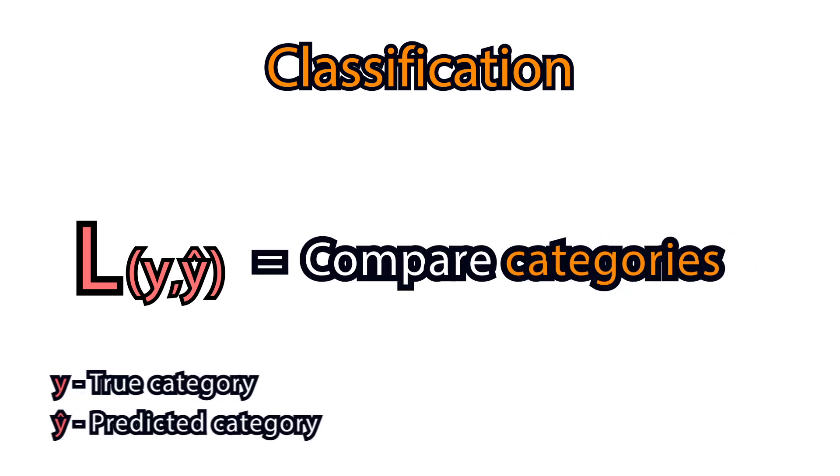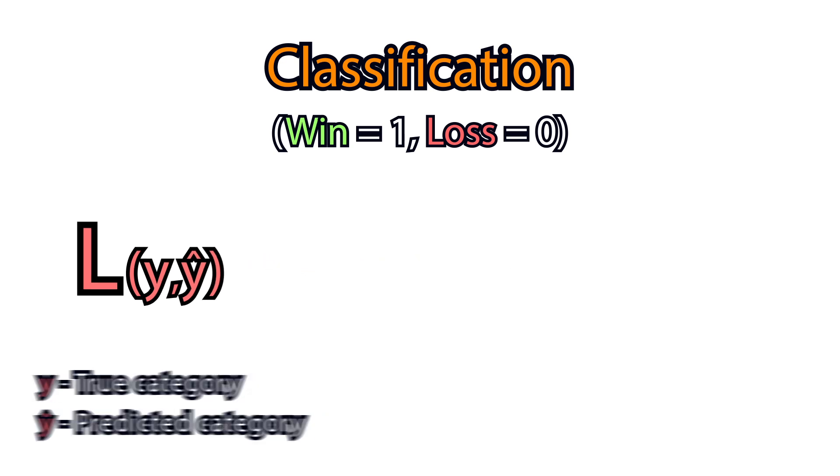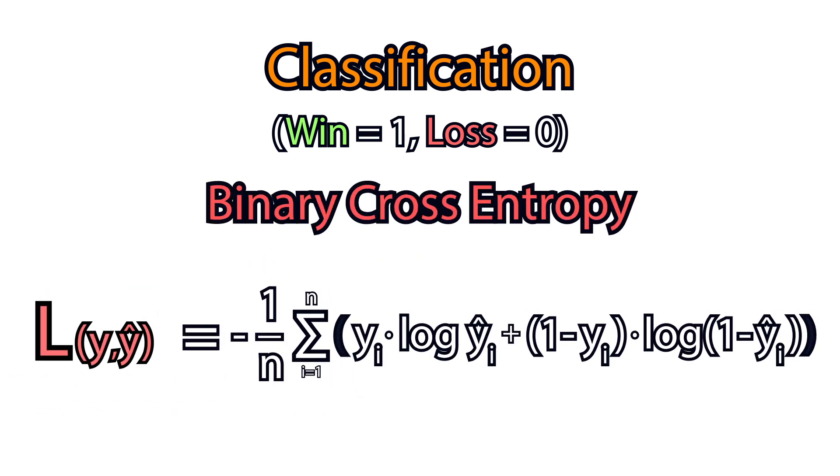For classification problems, we need to compare categories. Given two categories, say 1 for win and 0 for loss, cross-entropy loss quantifies the difference between two probability distributions.